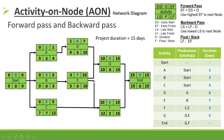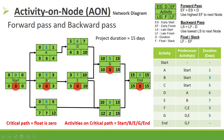Our project duration is 15 days. The critical path is where the float is 0: Start → B → E → G → End, and also through F. This is the same critical path calculated in part 1 using the Activity on Arrow method.